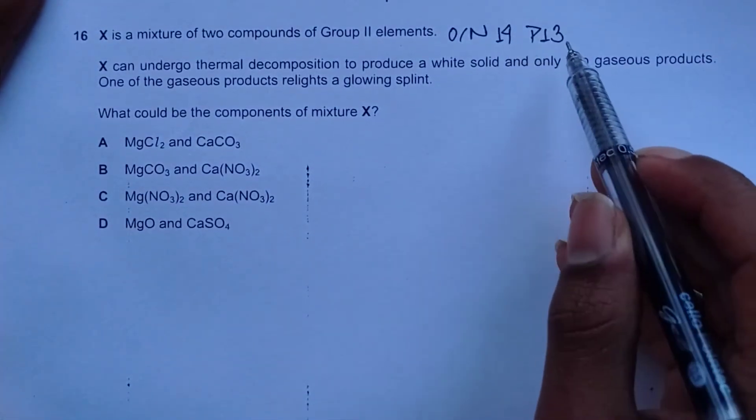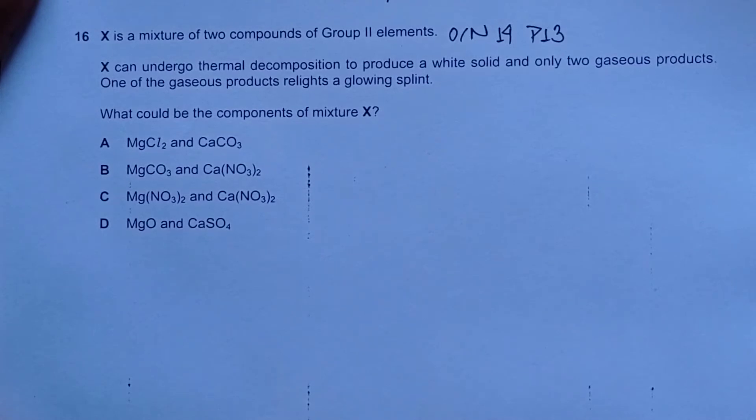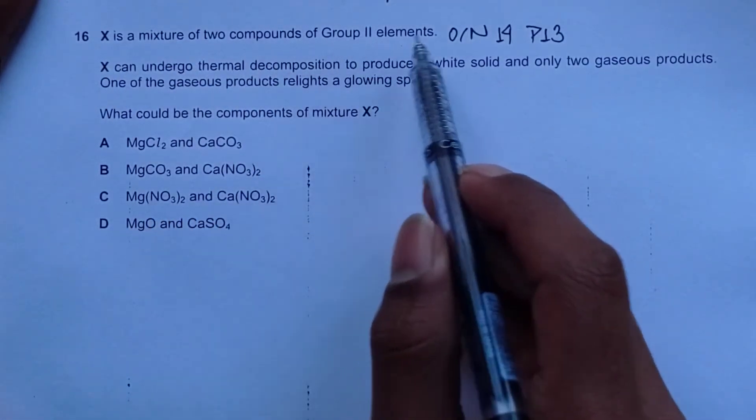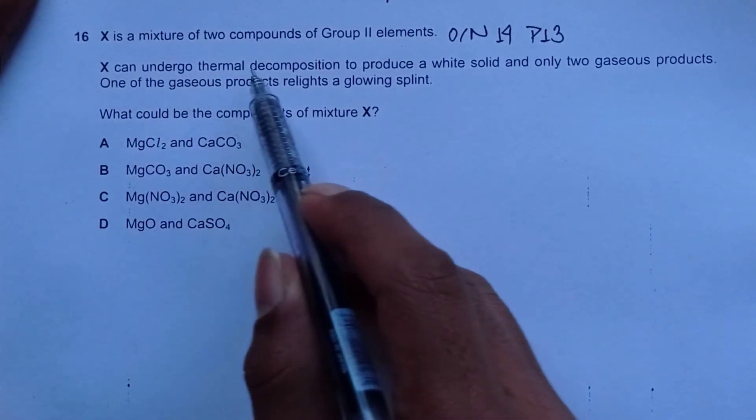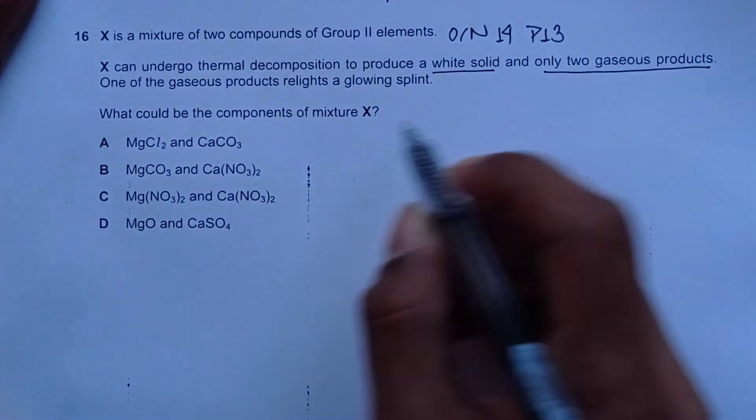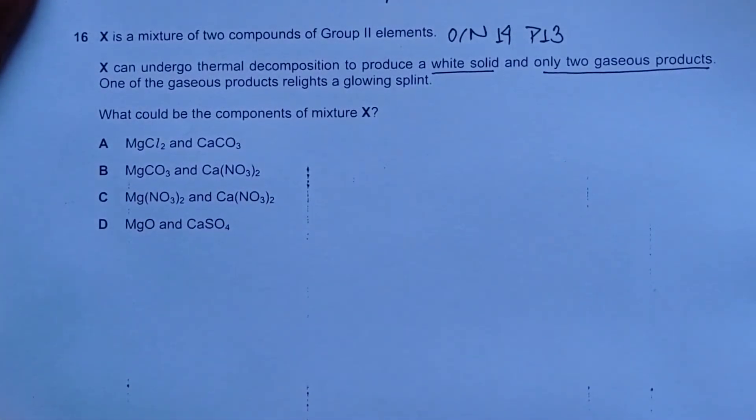Hello everyone, this is a November 14 question, paper 1-3 and the question of May 16. This question is concerned with Group 2. X is a mixture of two compounds of Group 2 elements. X can undergo thermal decomposition to produce a white solid and only two gaseous products. One of the gaseous products relights a glowing splint.